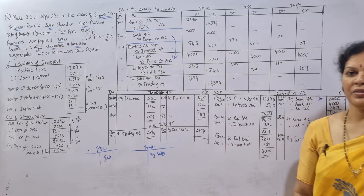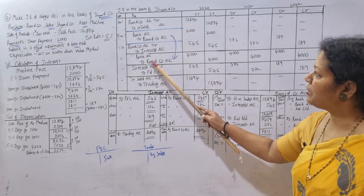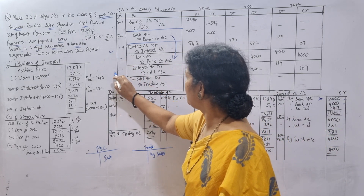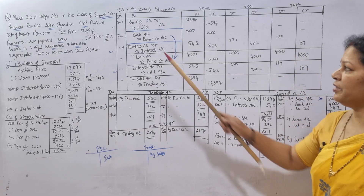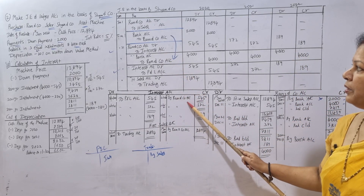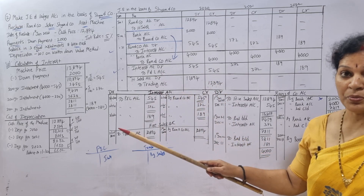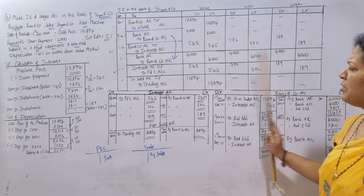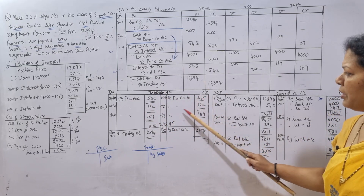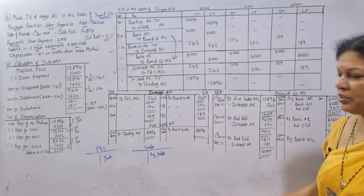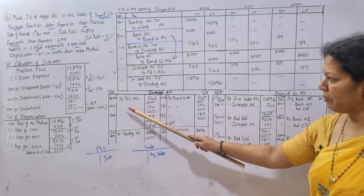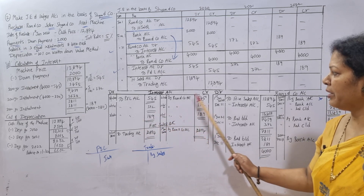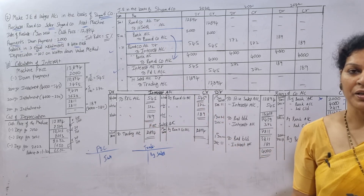Interest account is very simple. Interest is credited when received from Ramen Company and debited when transferred to Profit and Loss account. Each year: credit side — By Ramen Company: 545 in year one, 372 in year two, 189 in year three. Debit side — To Profit and Loss account: 545, 372, and 189 respectively. This records the providing of interest income and its transfer to the P&L account.